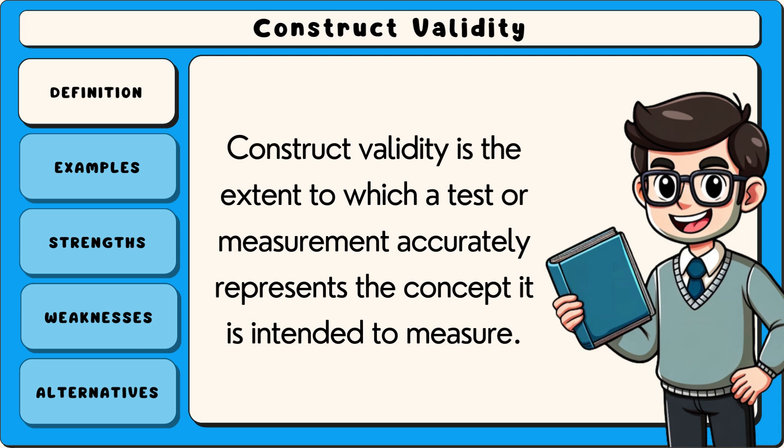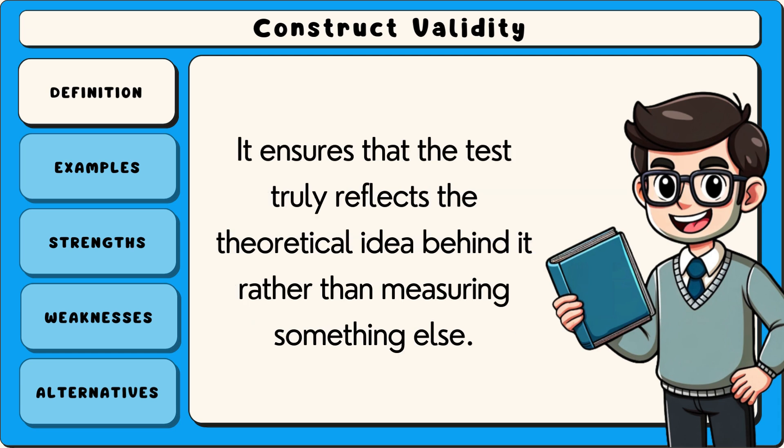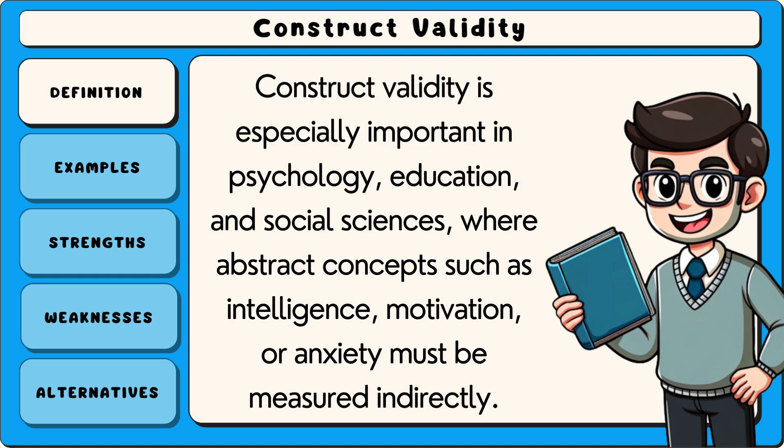Construct validity is the extent to which a test or measurement accurately represents the concept it is intended to measure. It ensures that the test truly reflects the theoretical idea behind it rather than measuring something else. Construct validity is especially important in psychology, education, and social sciences, where abstract concepts such as intelligence, motivation, or anxiety must be measured indirectly.